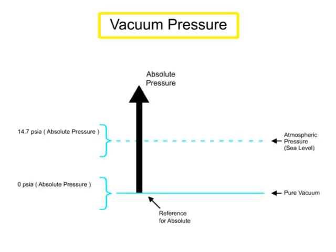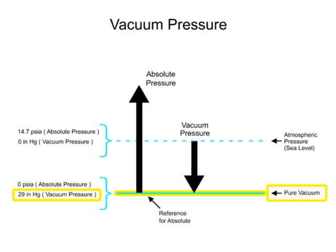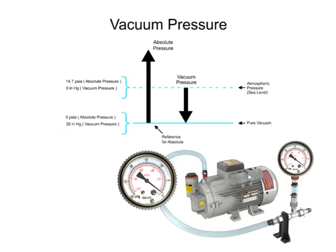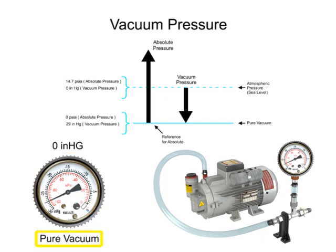For vacuum pressure, the scale begins at atmospheric pressure at sea level as the reference and ends at complete absence of pressure, or pure vacuum. At sea level, the measurement scale indicates zero inches of mercury, and at pure vacuum, the measurement scale indicates 29.92 inches of mercury.